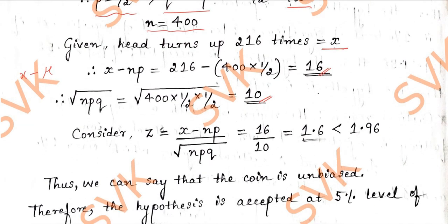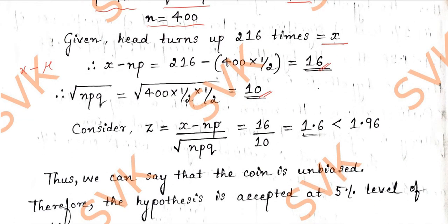Then considering the normal variant Z is equal to X minus NP divided by square root of NPQ, we are going to get, substituting the value above, 16 by 10. We are going to get 1.6, which is less than the critical value, that is for 5% level of significance, the table value we have is 1.96.